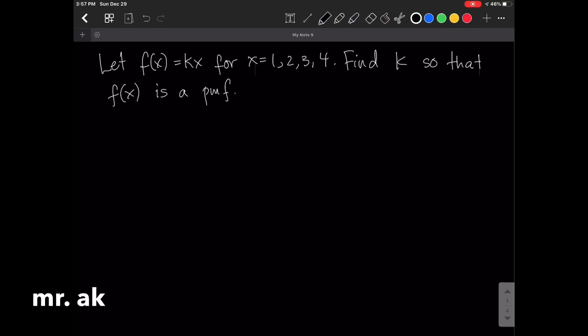First things first, we identify that this is our support. Now, remember that f(x) is a probability. It's the probability that the outcome is x. And so, therefore, to find for the value of k...